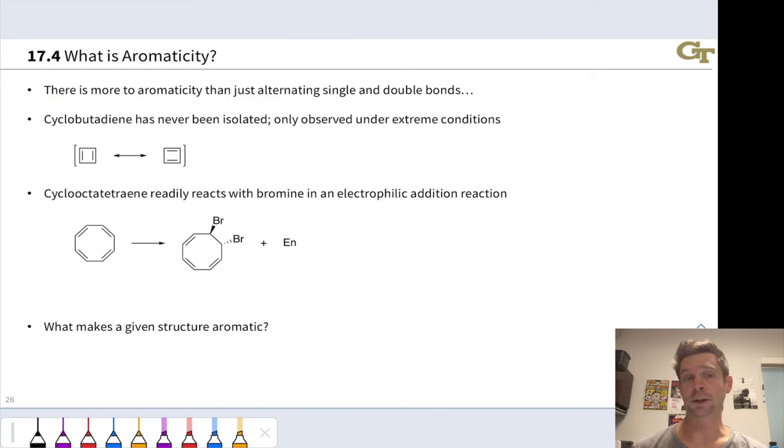Another example of a molecule that we might expect to behave as an aromatic compound is cyclooctotetraene, an eight-membered ring with alternating single and double bonds. But cyclooctotetraene readily reacts with bromine in an addition reaction, forming this anti-1,2-dibromide and the enantiomer. So what's going on here? What does make a compound aromatic if it's not just being cyclic and being fully conjugated?